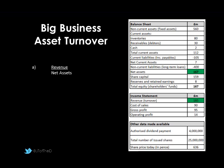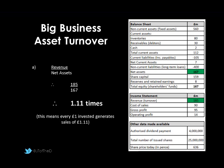Looking at big business, we have the information needed to calculate asset turnover on the right-hand side of the accounts. We're comparing revenue from the business — the amount of sales, not profit — and the net assets being employed. For big business, revenue is £185 million and net assets are £167 million. The calculation gives us 1.11 times, meaning for every pound invested we've generated sales revenue of £1.11.